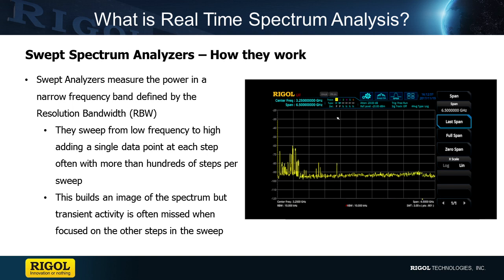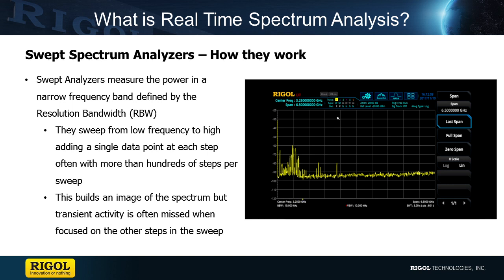A swept spectrum analyzer captures the amount of power detected in a small frequency span called the resolution bandwidth. It will post this power to the display and then go on to the next span, capturing the power in the signal often hundreds of times as the frequency being measured moves across the display. This creates accurate measurements but can miss events that occur in one frequency when a different frequency was being evaluated.